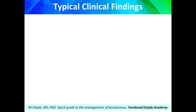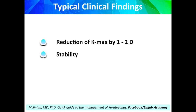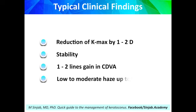The typical clinical findings include reduction of K-max by one to two diopters, stability of the cornea, one to two lines gain in corrected distance visual acuity, and low to moderate haze up to six months. This haze is different from that seen after PRK — after PRK the haze is caused by apoptosis, while here it is caused by dehydration and inflammation from the oxidative agents. We should not be afraid of the haze because it is a good sign, but it should be low to moderate, not severe, and we should not suppress it with intensive steroids, otherwise we will lose the effect of corneal crosslinking.